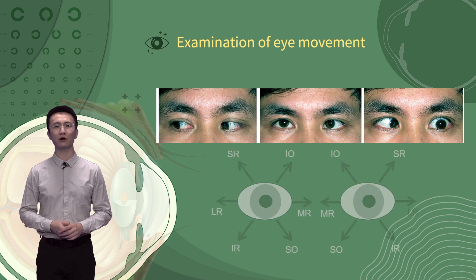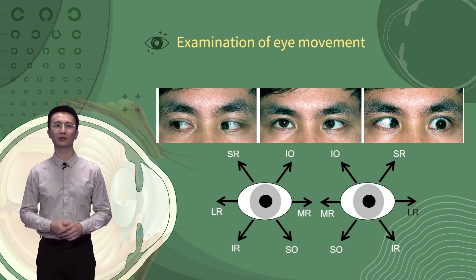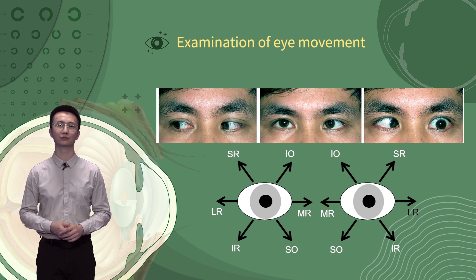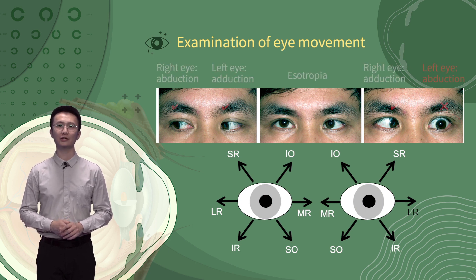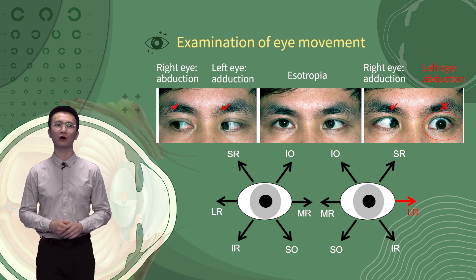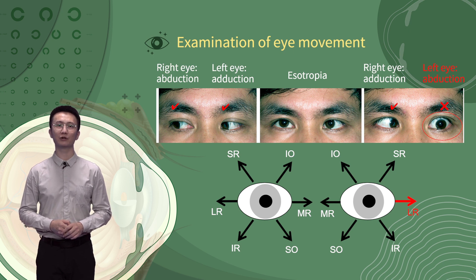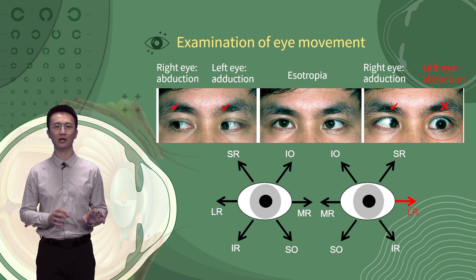Limitation of ocular movements may be due to direct involvement of the extraocular muscles, interference with the mechanism of action, or dysfunction of the oculomotor, trochlear, or abducens nerves. Therefore, oculomotor examination is important to detect which, if any, extraocular muscles or cranial nerves are paralyzed, overactive, or restricted. Limitation of ocular movement is most remarkable at the diagnostic positions of the paralyzed muscles. For example, when the lateral rectus or the sixth cranial nerve of the left eye is paralyzed, abduction of the left eye is reduced or absent, which is obvious when asking the patient to look to the left side.